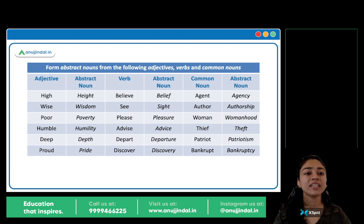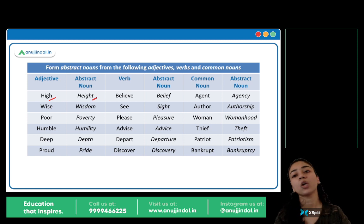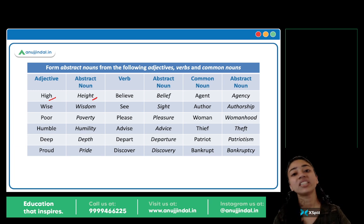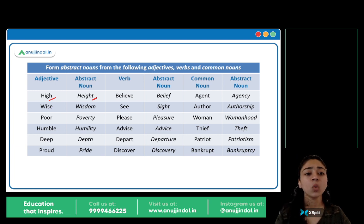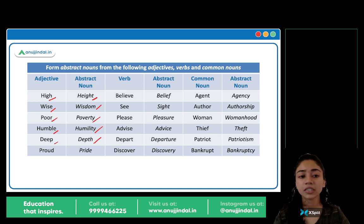Okay, let's see. Pehle adjectives diye hain. High — abstract noun kya hoga? Height. Long — length. Wide — width. Wise — wisdom. Poor — poverty. Humble — humility. Deep — depth. Proud — pride.